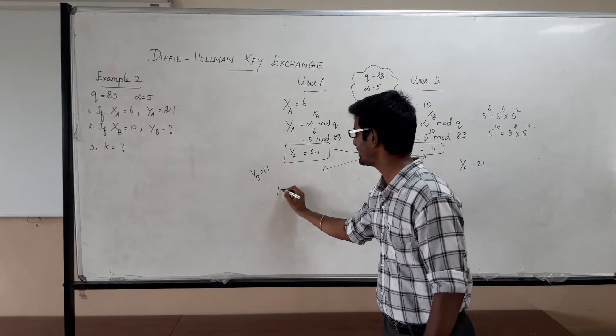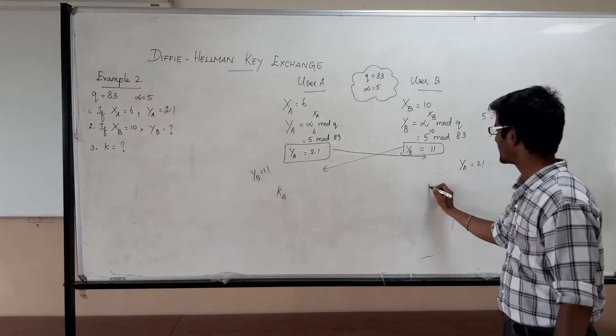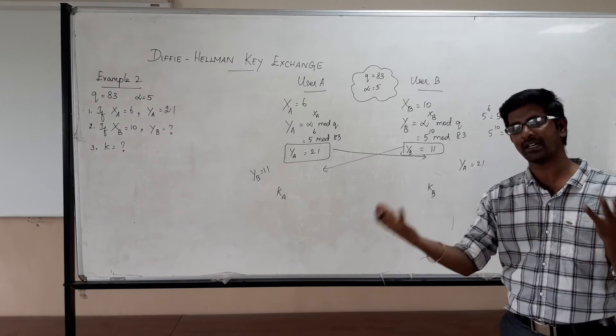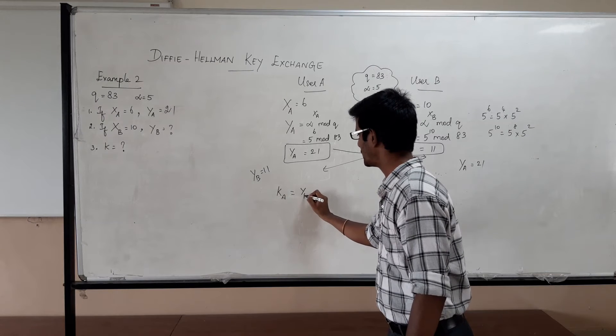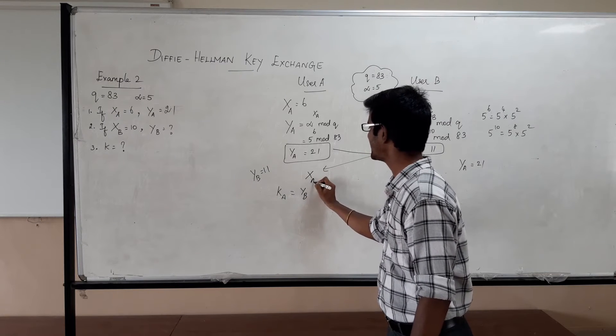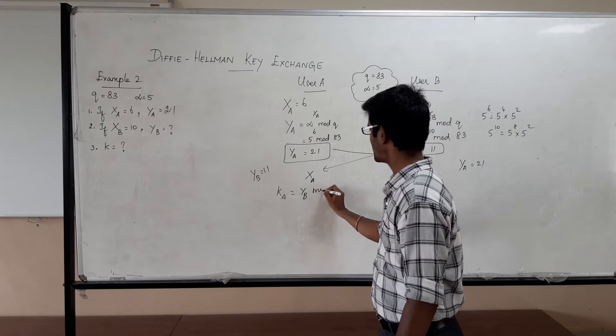Now let us say the shared secret key we can either compute KA or KB because we know KA and KB are going to be the same. So KA equal to what he has received? YB. YB to the power of his private key XA mod Q.